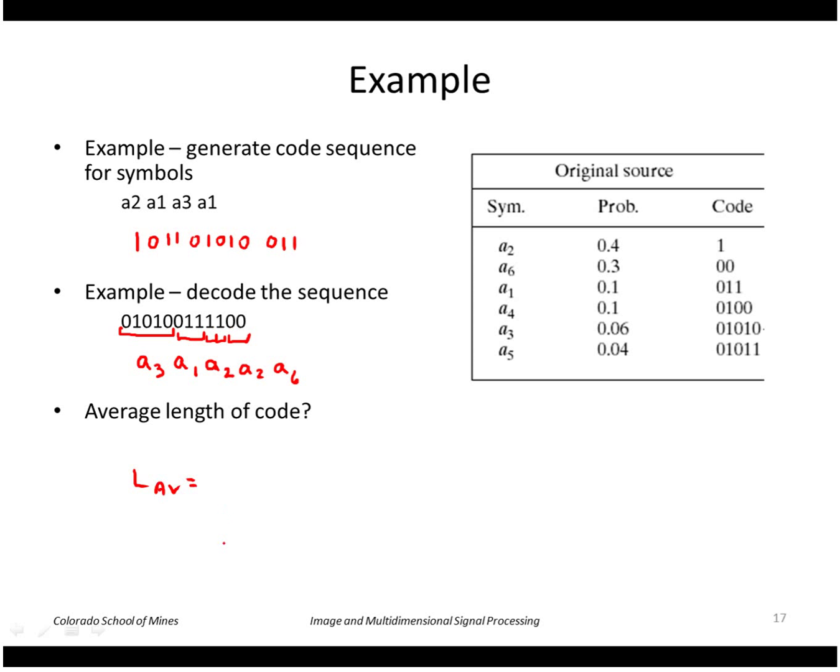In terms of the average length of the code, we just multiply the length of each code word times its probability. So we got 0.3 here, 3 times 0.1, 4 times 0.1, 5 times 0.06, and 5 times 0.04, and that comes out to 2.2 bits per symbol.